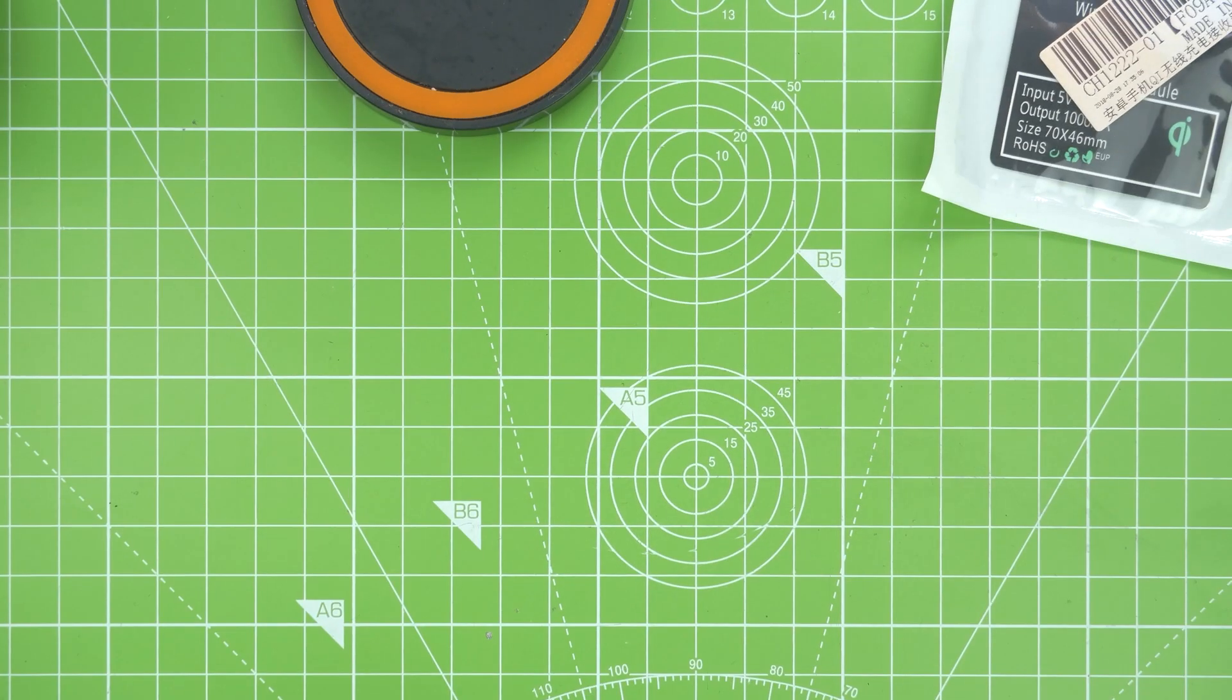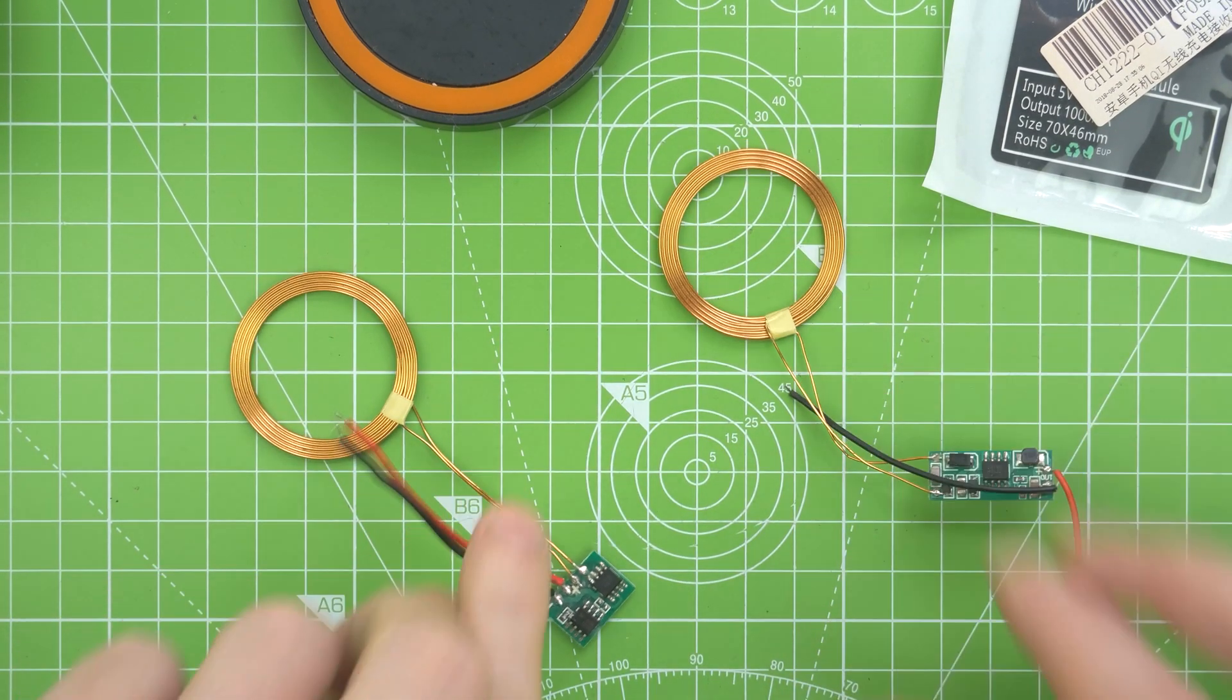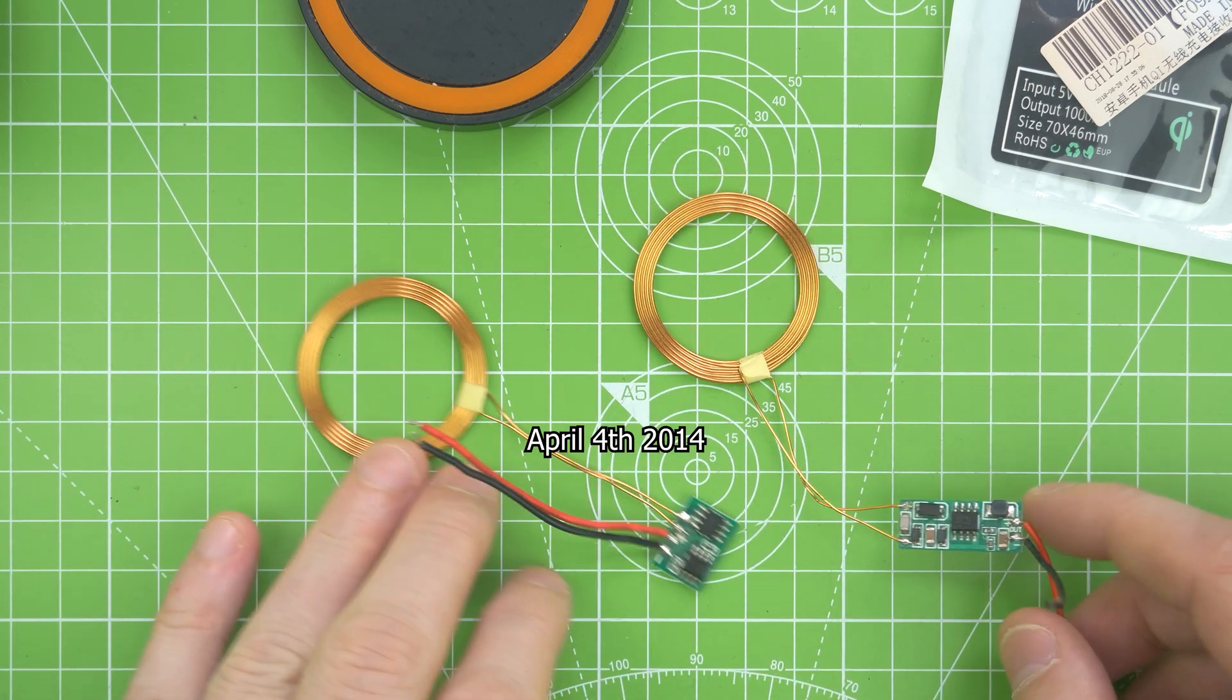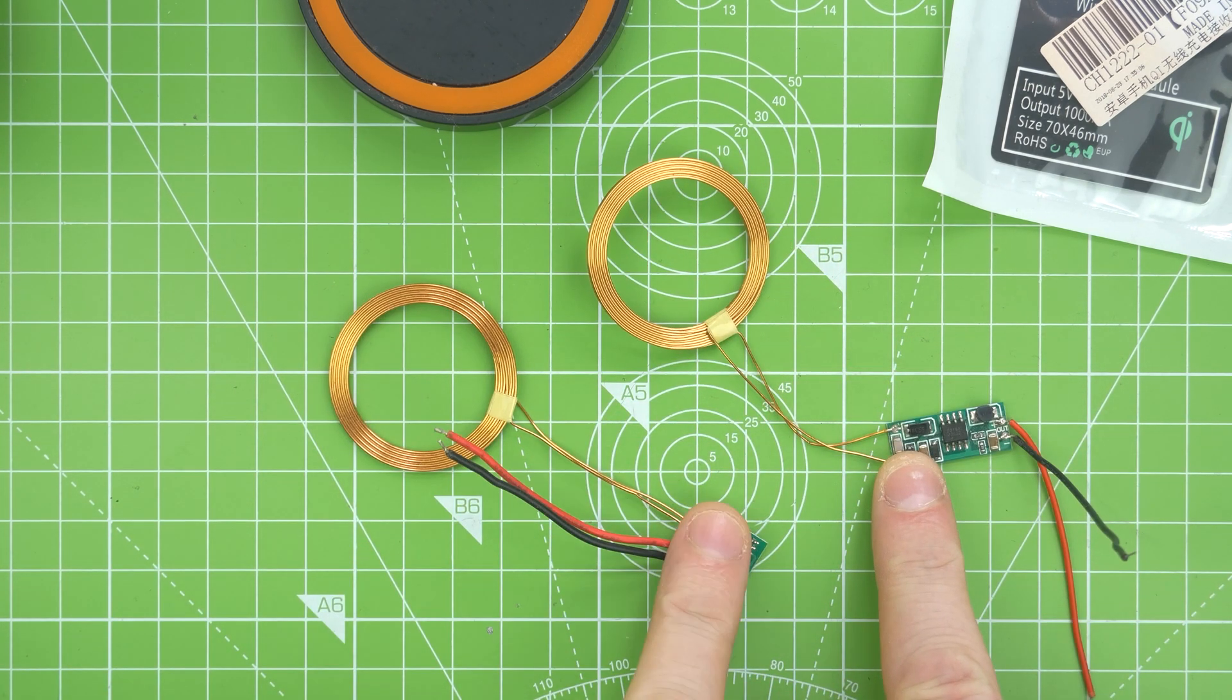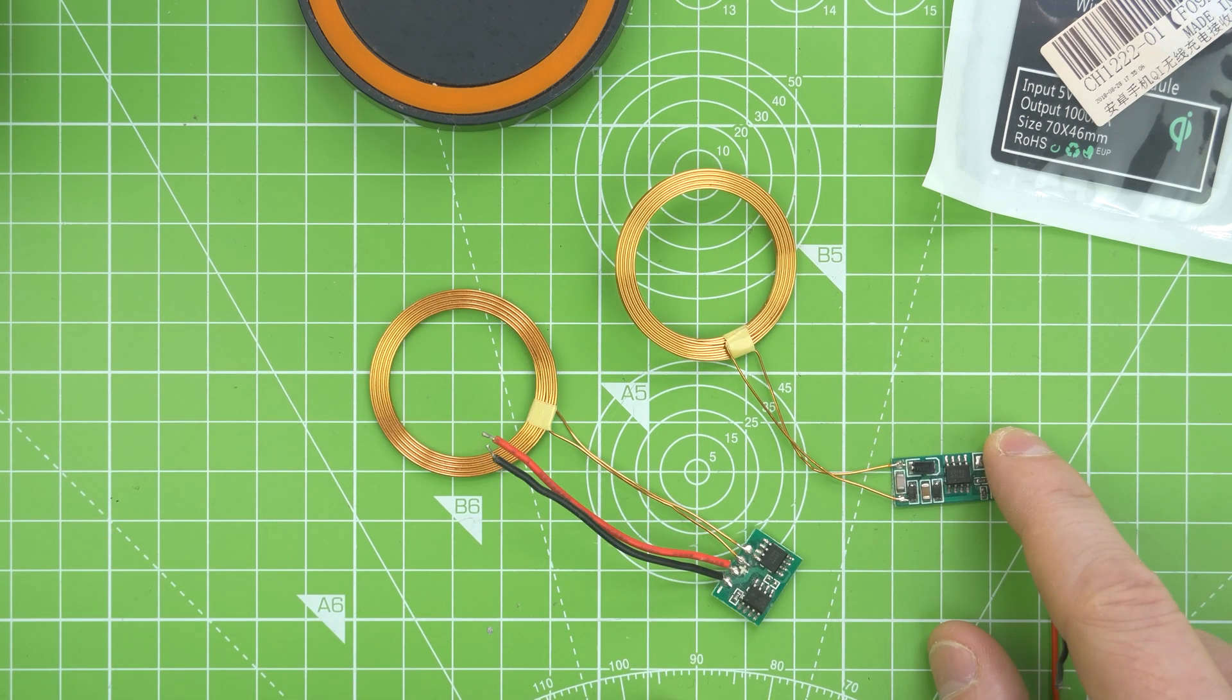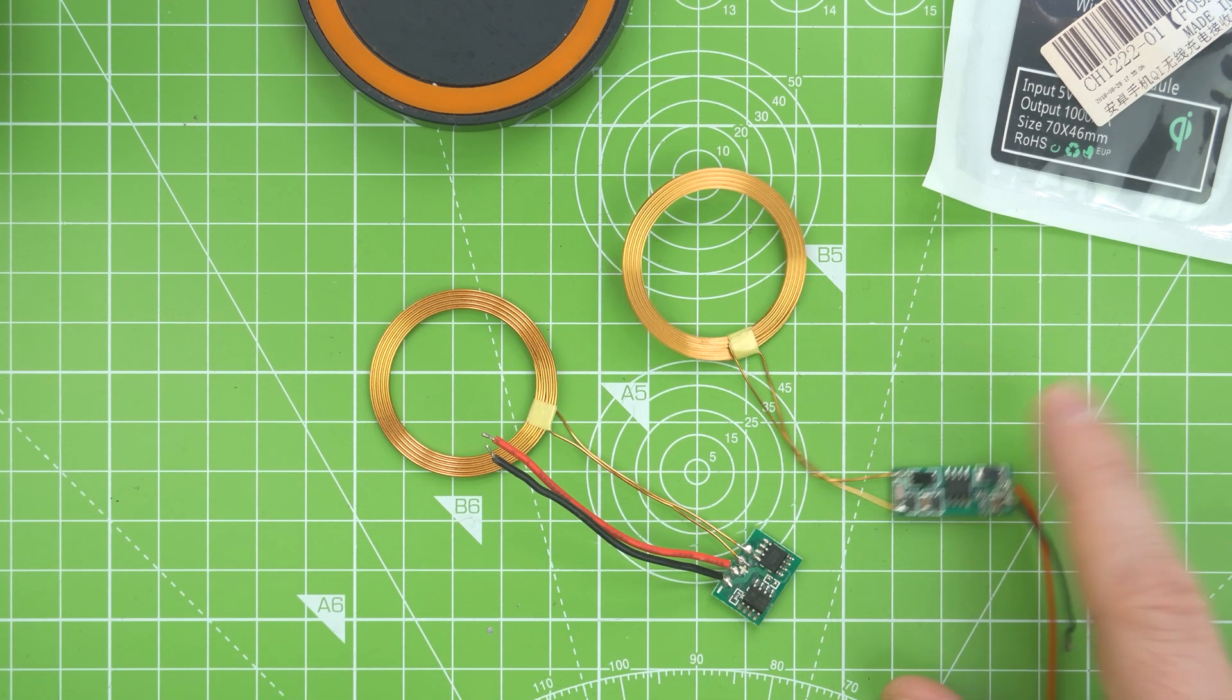A while back, about five or six years ago, I picked up this transmitter and receiver. You throw 12 volts into one side and get around 5 volts out of the other. I think it's regulated with one of those chips on there.